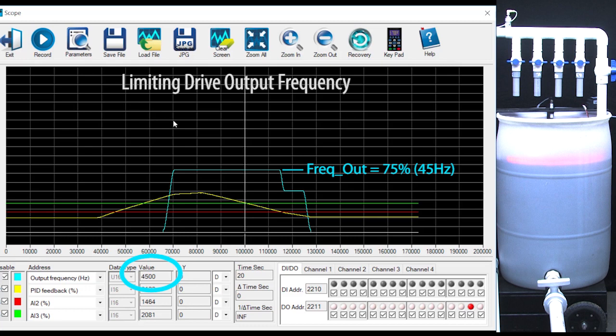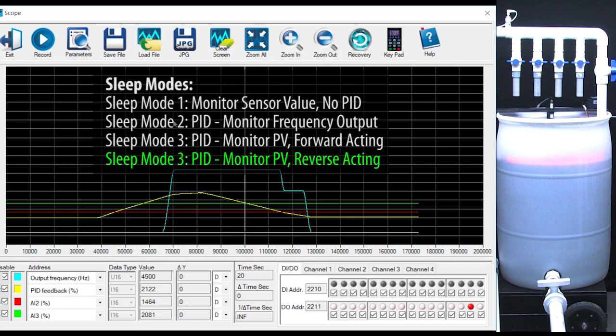Limiting the drive output frequency is a great way to reduce the stress on your motor if your application doesn't need the full output frequency. Well that ought to be enough to get you started with sleep mode 3 when using a reverse acting system.